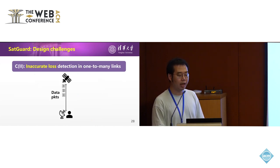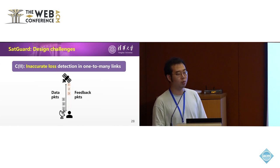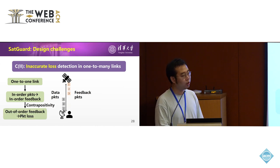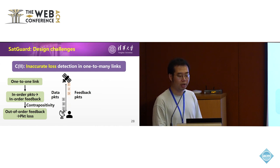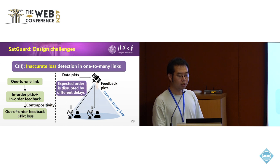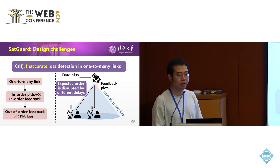The second challenge is inaccurate loss detection in one-to-many links. In a one-to-one link, sending packets in order 1 to 3 leads to feedback in order 1 to 3, so out-of-order feedback can be regarded as indicating packet loss. However, in one-to-many links, sending packets in order 1 to 2 may lead to feedback with order 2 then 1, because the expected order is disrupted by different delays. So in one-to-many links, in-order packets may not lead to in-order feedback, and out-of-order feedback cannot be regarded as packet loss. How to detect loss in such one-to-many links is another challenge.